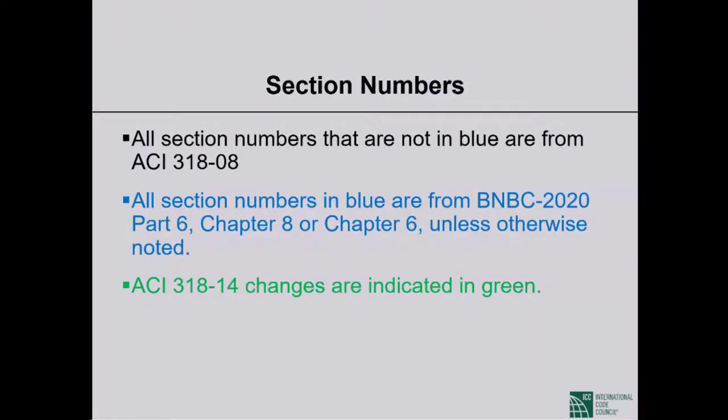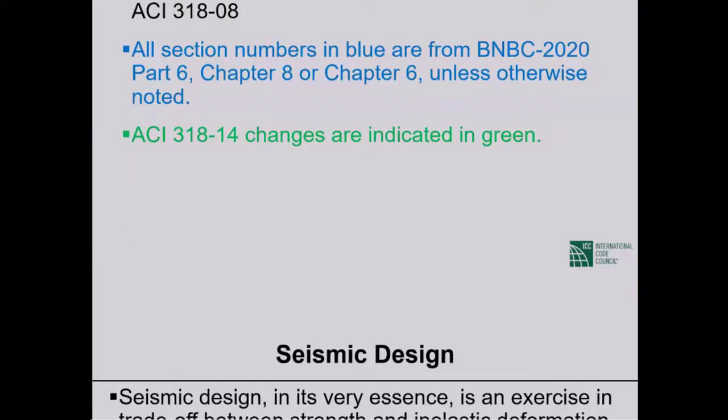An important note on color coding in the slides: all section numbers in blue are from BNBC 2020 Part 6 Chapter 8 or Part 6 Chapter 6 unless otherwise noted. ACI 318-14 changes are indicated in green. So keep that in mind — blue is BNBC and green is 318-14.